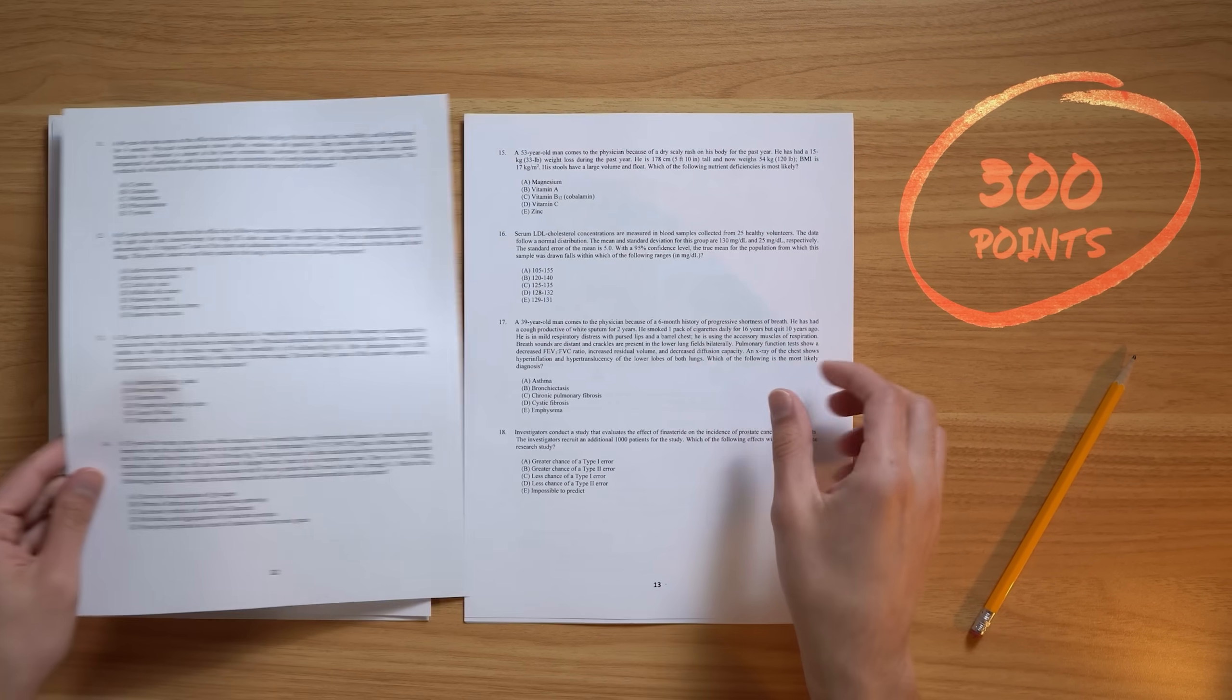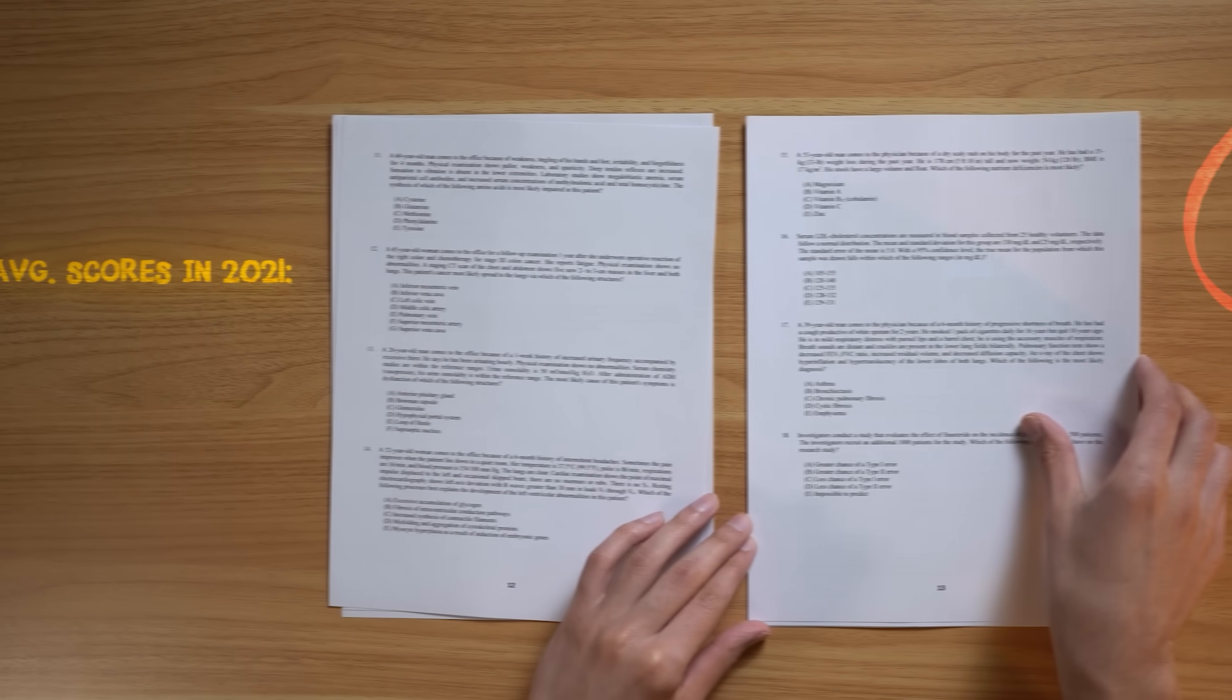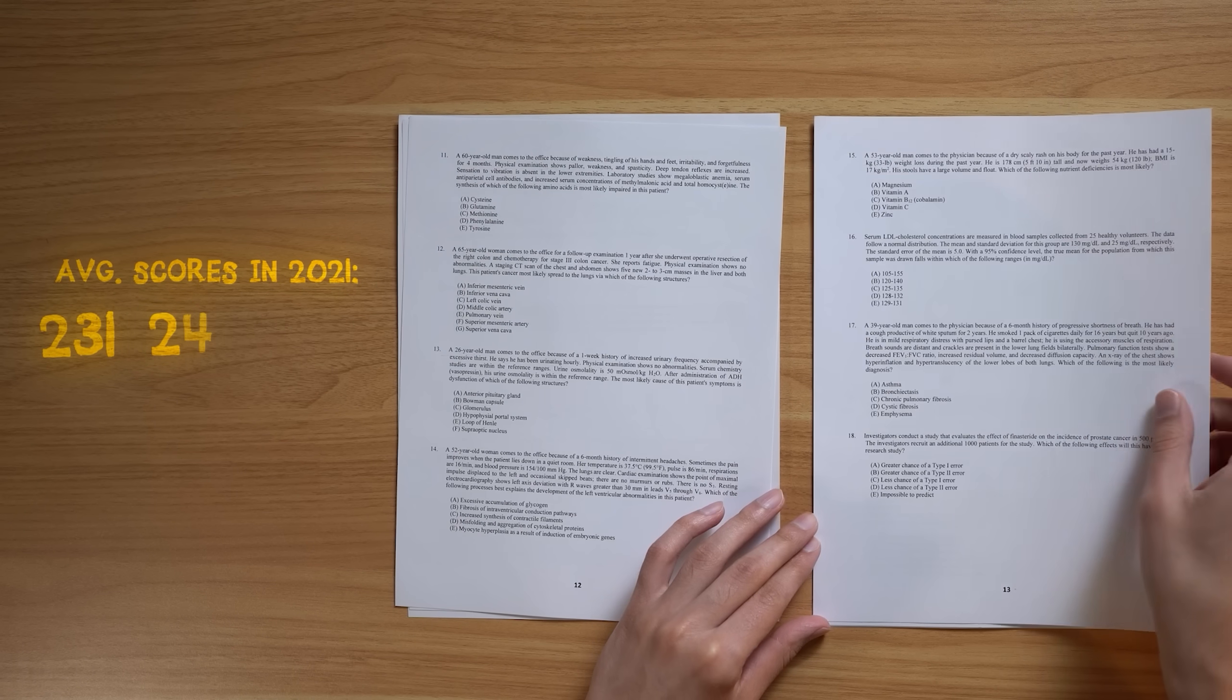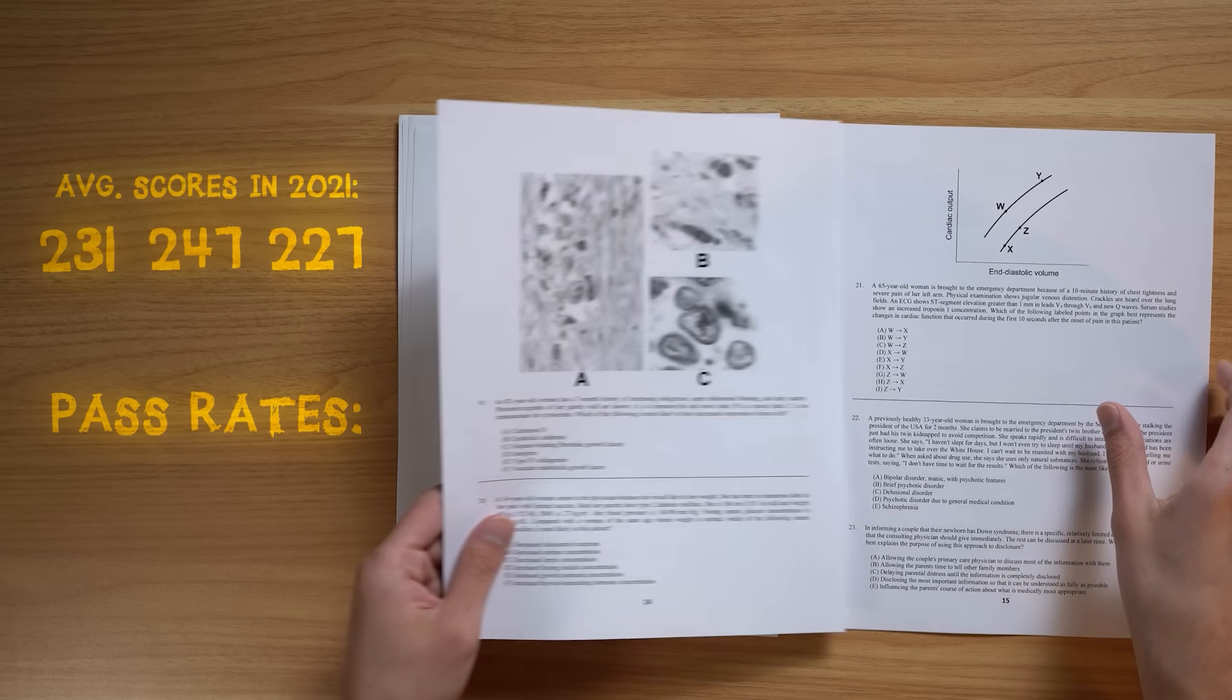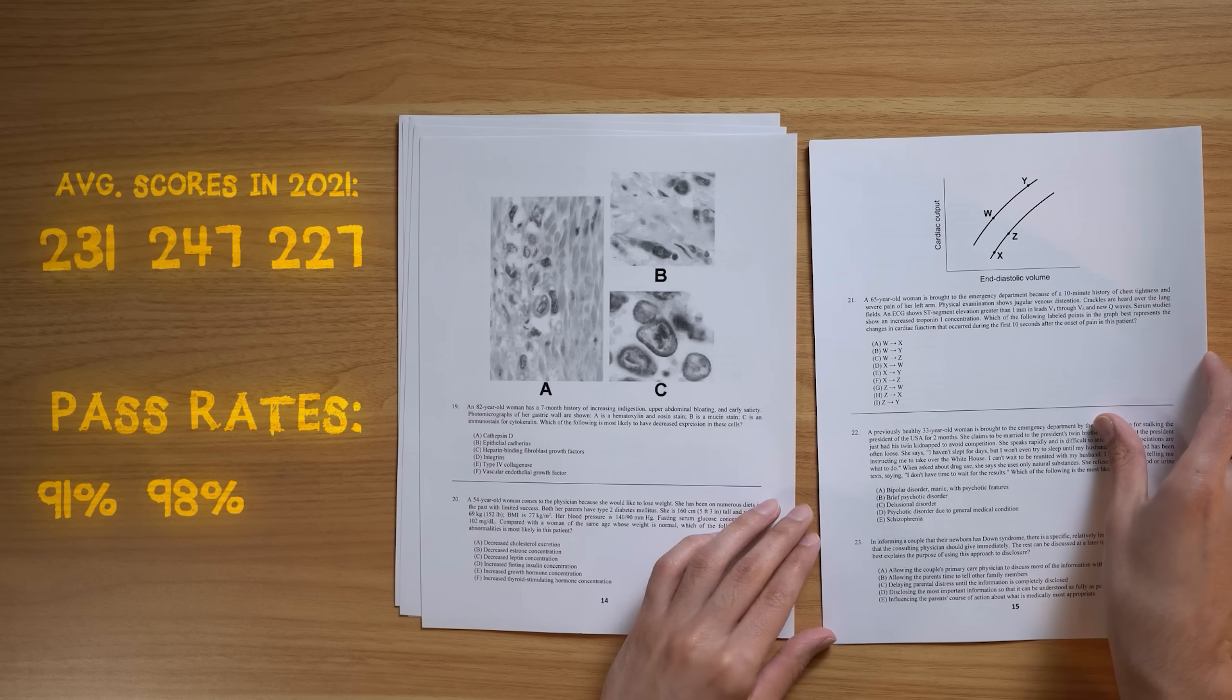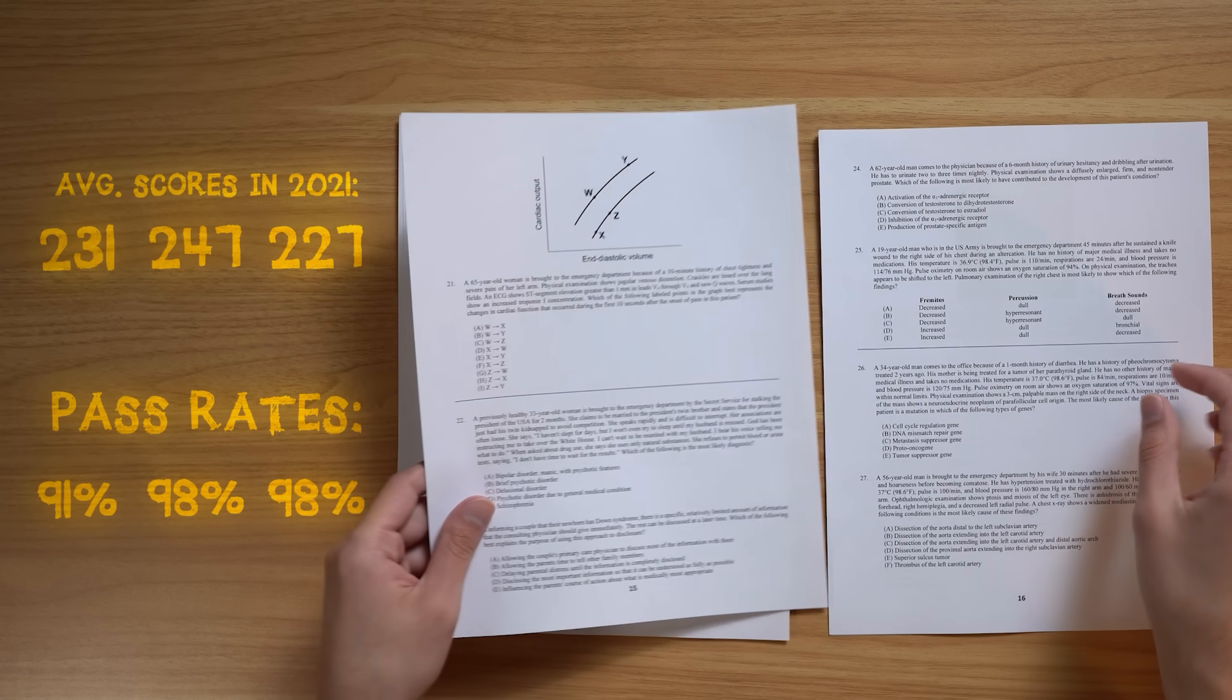Each of these three exams is out of 300 points. In 2021, the average scores were 231, 247, and 227 respectively. And these three steps have surprisingly high pass rates of 91%, 98%, and 98% respectively. Which I guess makes sense because these students were smart enough to get into medical school in the first place.